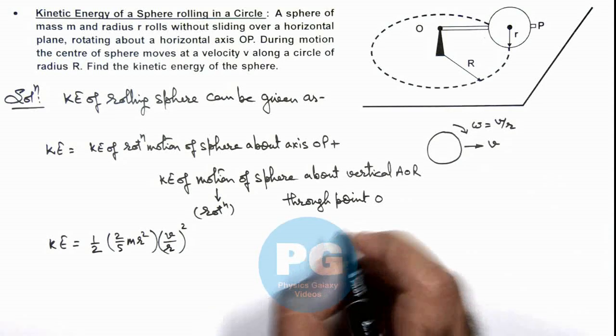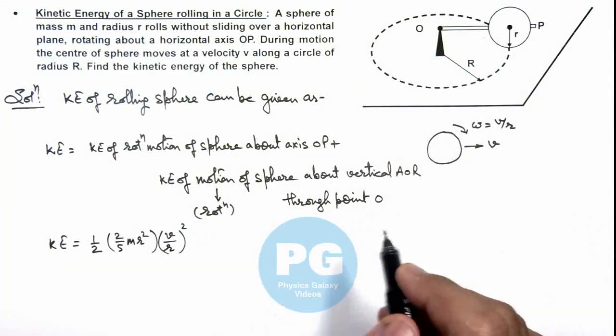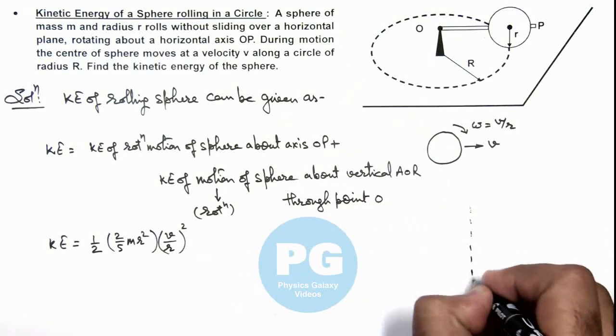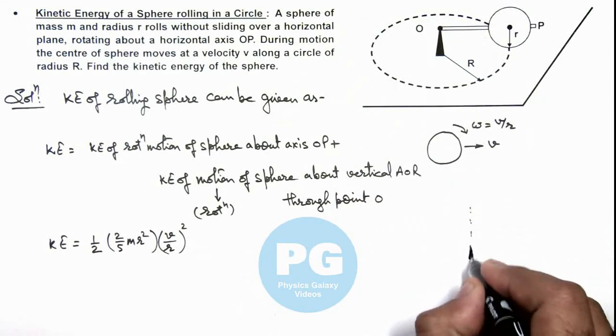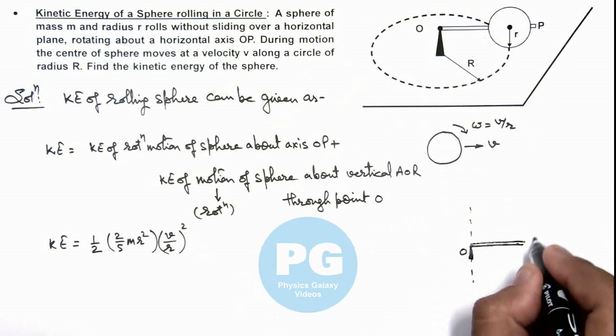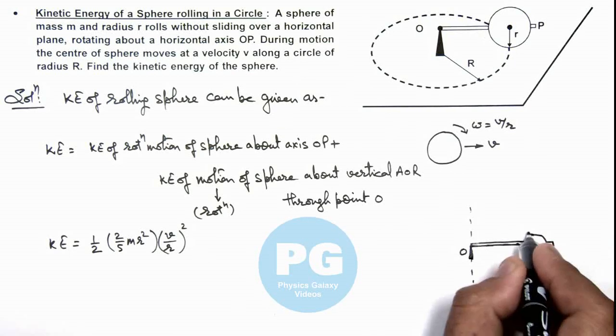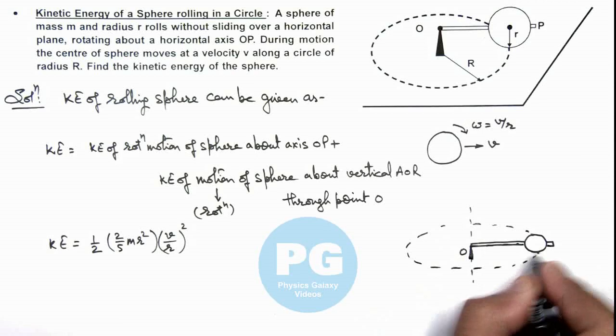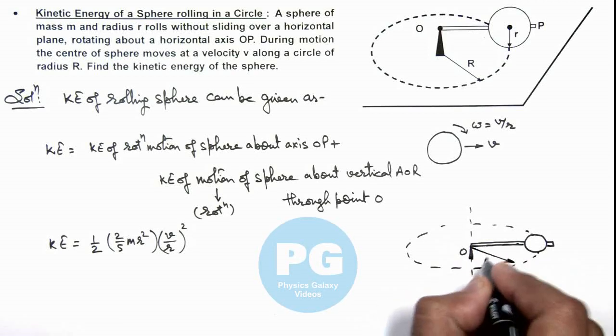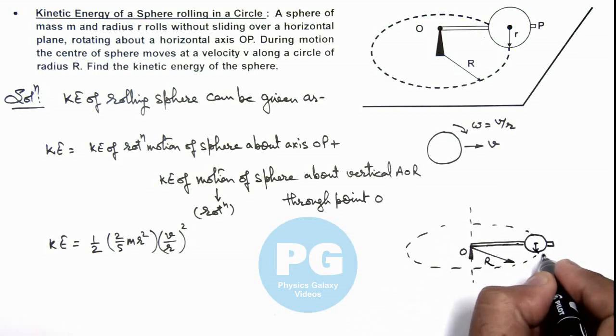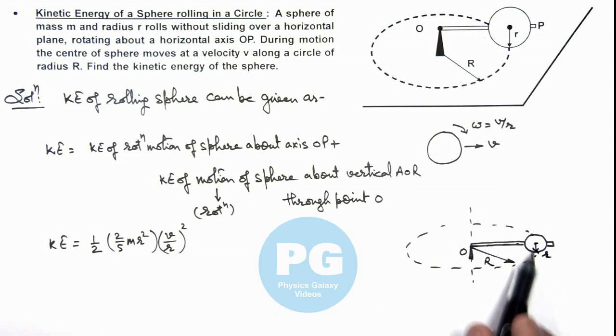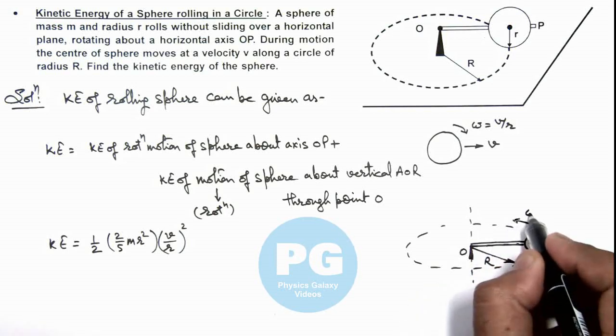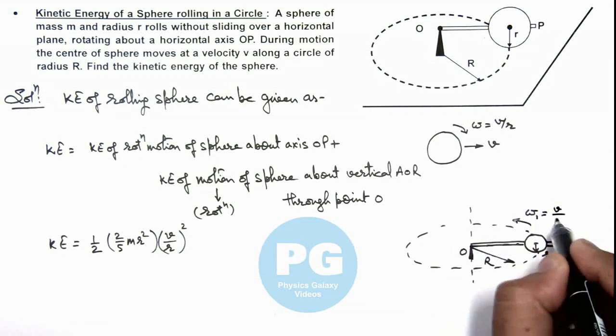If we talk about the motion of sphere about the axis passing through point O - we draw another axis which is passing through point O about which the sphere is in horizontal circular motion. Here the radius of this circle is R, and the radius of this sphere is small r. This is moving at angular speed omega, and this omega 1 is equal to v by capital R.